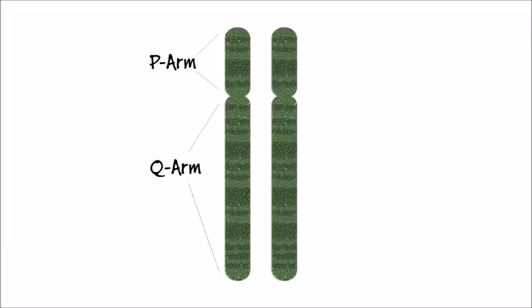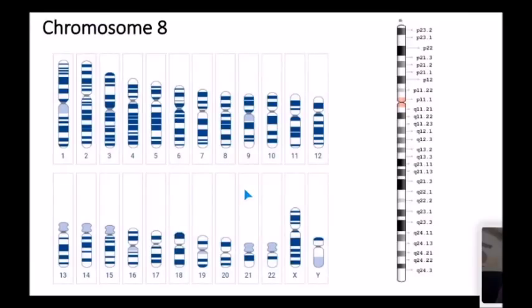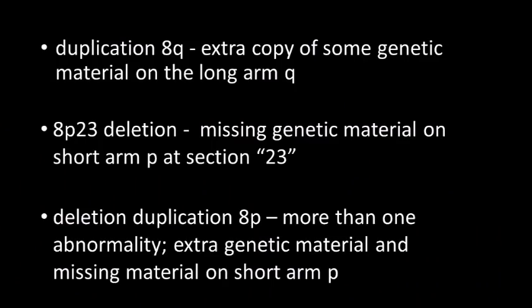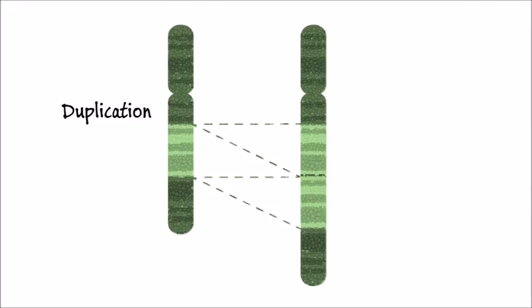You may hear about a chromosome disorder that has the number 8 followed by the letter P or Q. The 8 refers to chromosome 8. The P or Q tells you which arm has the abnormality, the short P arm or the Q arm. The P or Q may be followed by a string of numbers. The numbers correlate to genetic material on the chromosome and tell doctors at which point the genetic material has been disrupted. So if you hear of duplication 8q, that means there is a duplication, an extra copy of genetic material, on long arm Q of chromosome 8.